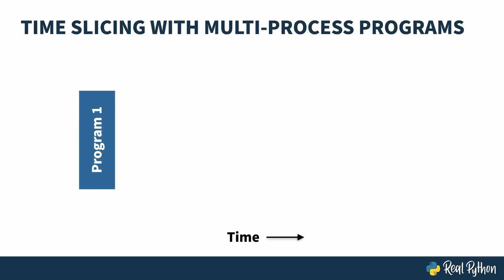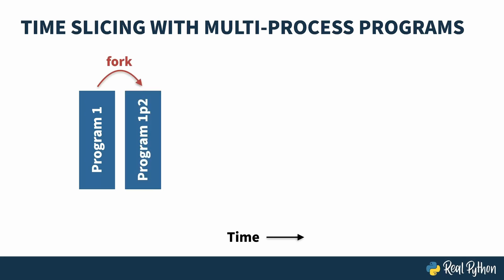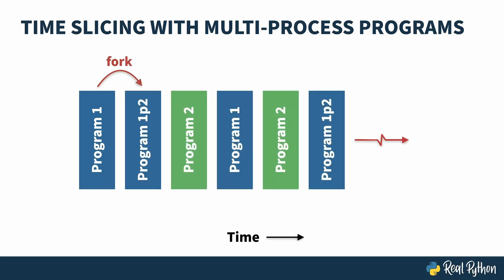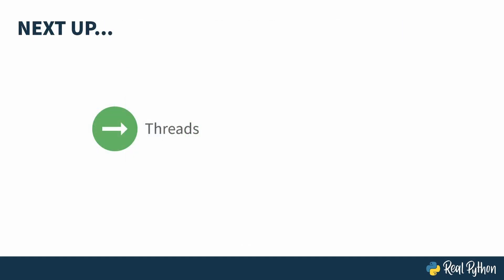So how does multiprocessing affect our previous time-slicing picture? Not by much, actually. You start off with your program, which then asks the operating system to create a new process. On Unix-based systems, this is called forking your process. And from then on, the picture is the same — the operating system is time-slicing processes instead of programs. Processes get a complete copy of the code and their own memory space, and so can be considered to have a lot of overhead. Threads address this problem.